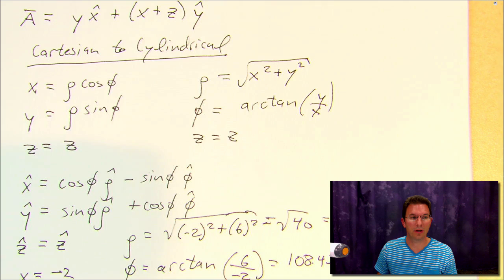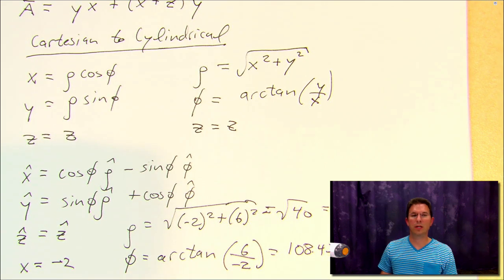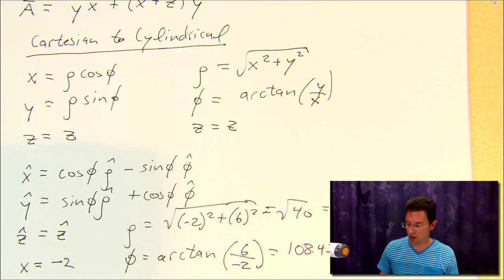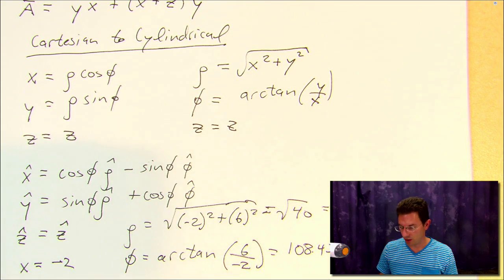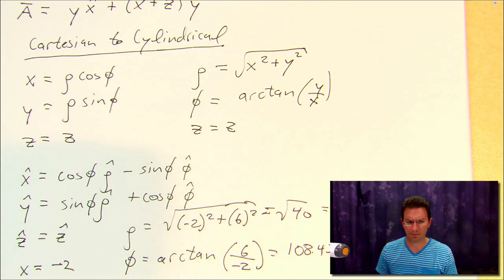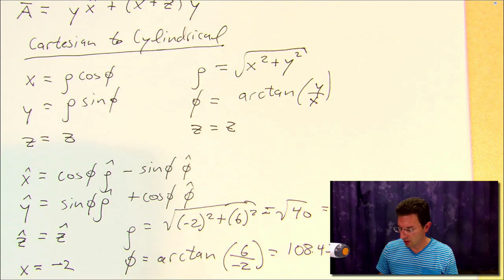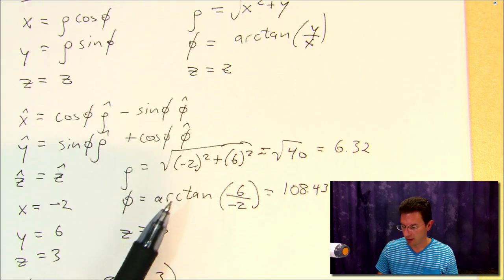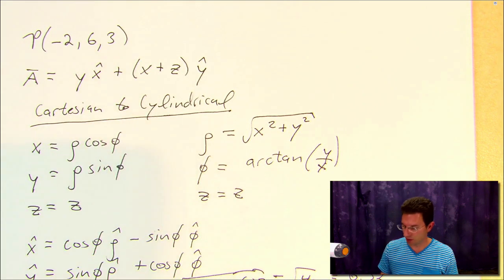Let's see how we would do this. In order to go from Cartesian to cylindrical, we need some relationships. And these really are the relevant ones for us here that we're also going to use in a moment. So what we're going to do is, first of all, let's just simply convert this point P from Cartesian to cylindrical coordinates.